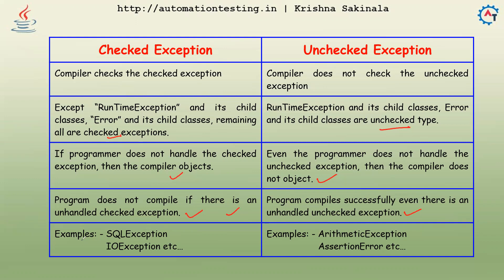Examples of checked exceptions are SQLException and IOException. Examples of unchecked exceptions are ArithmeticException and AssertionError. Now we'll see the difference with one example — we'll look at one checked exception and one unchecked exception. Let me go to Visual Studio Code.